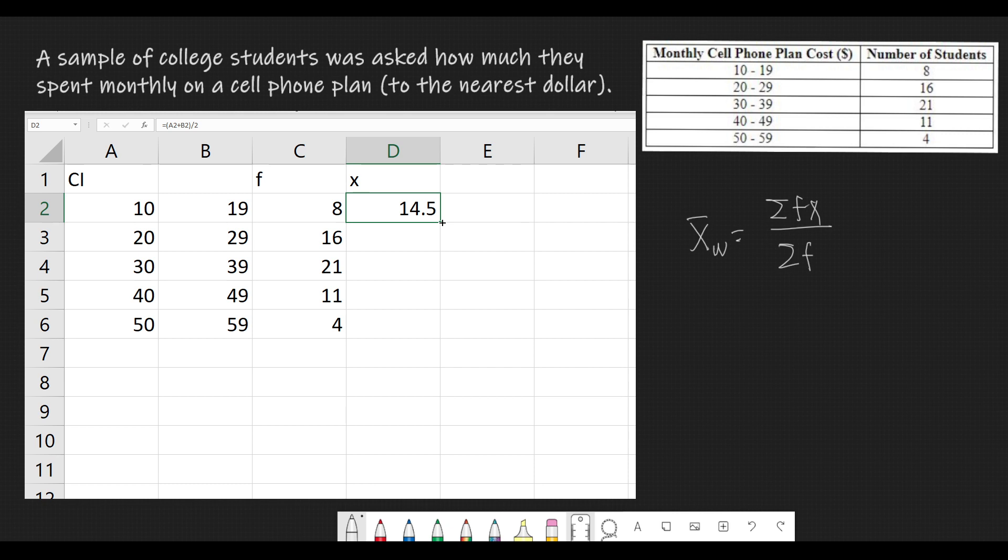Next, we multiply f times x. We just do that by pressing equal sign, 8 times 14.5. Press enter, we get 116. Then, drag it down to get the f times x of each row.